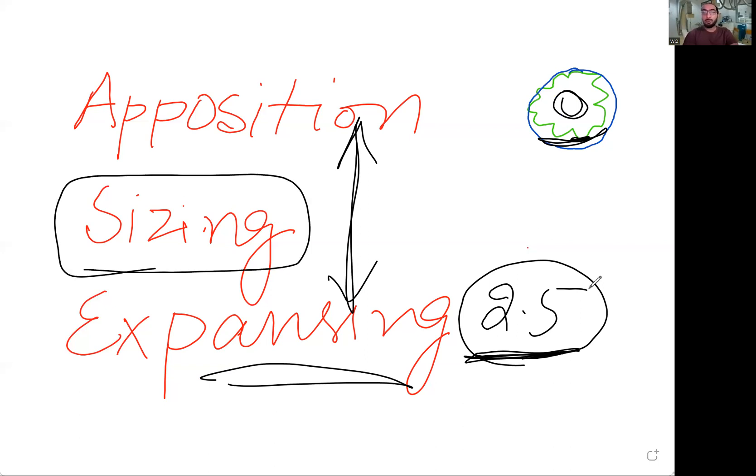If you're using a 4.0 vessel and putting a 2.5 stent in it, this is undersizing the vessel. If you're using a 3.0 stent inside a 2.5 vessel, this is an oversized vessel, and it will be under-expanded.